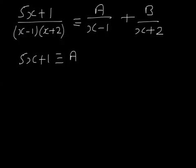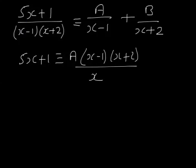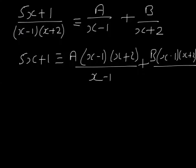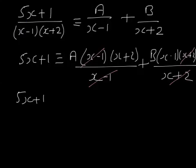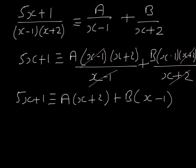Then we multiply the first term by (x minus 1)(x plus 2), and the second term by (x minus 1)(x plus 2). The x minus 1's cancel and the x plus 2's cancel, so we end up with: 5x plus 1 is equivalent to A lots of (x plus 2) plus B lots of (x minus 1). After practice you should be able to go straight to this line, but be careful — make sure you understand which parts are cancelling.